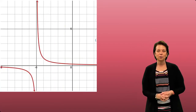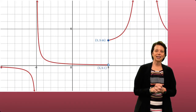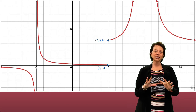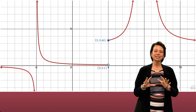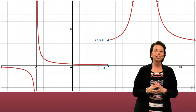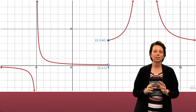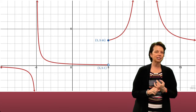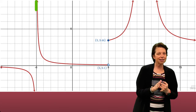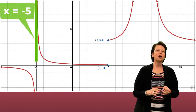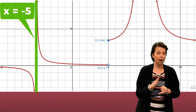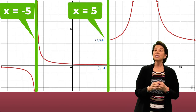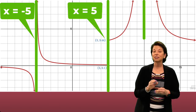Let's start with the graph that we have before us. I want you to look at some of the key features of this graph, particularly when x is around negative 5, when x is around positive 5, and when x is around 10.